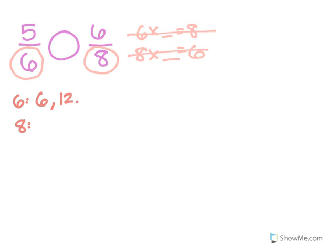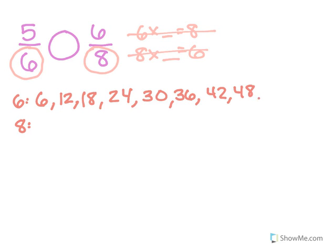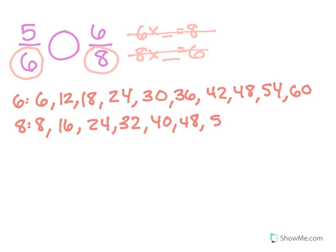So I'm going to go through: 6, 12, 18, 24, 30, 36, 42, 48, 54, 60 — and I'm just going to stop at 10 for now. Then for 8: 8, 16. Remember, the common multiples are the math facts of it. So 16, 24, then 32, 40, 48, 56, 64, 72, and 80. So I'm going to look for what they have in common. I can see no 6, no 12, no 18 — but I do see 24 and 24.